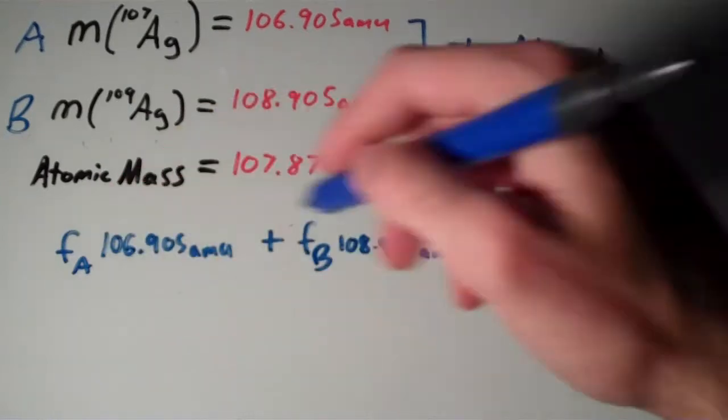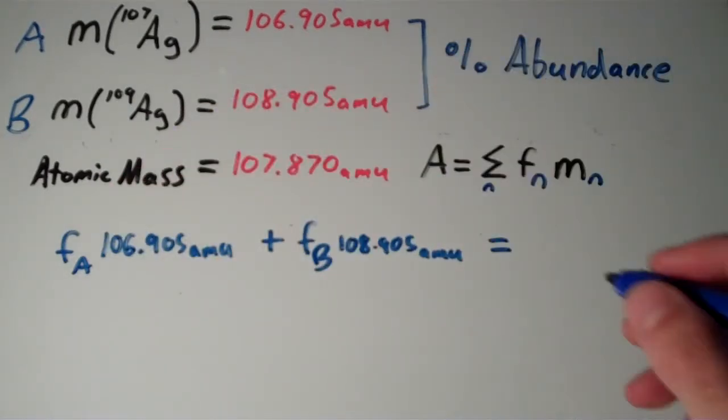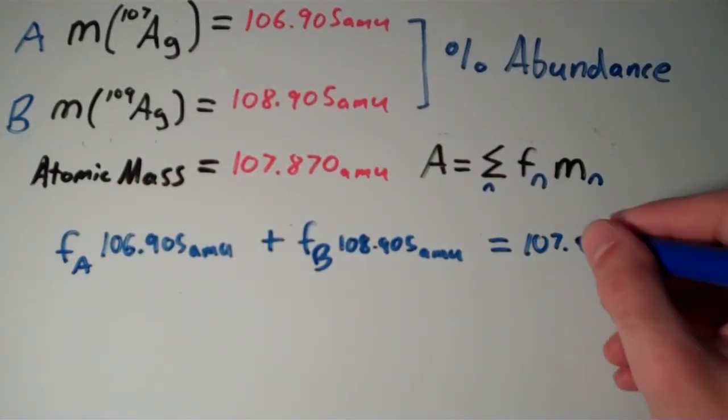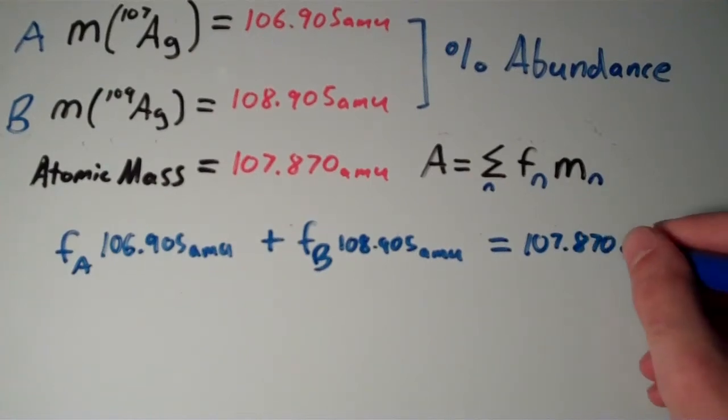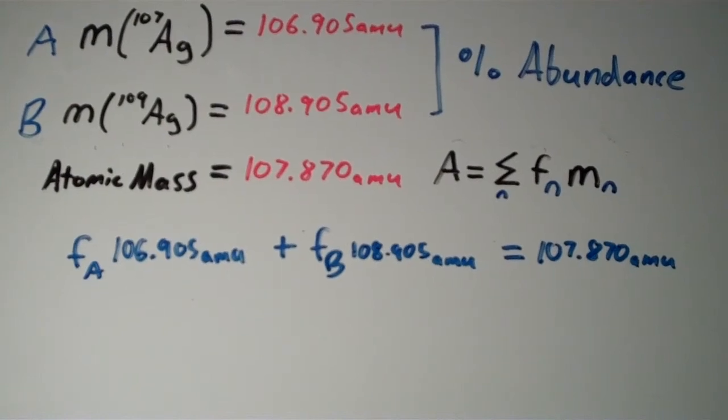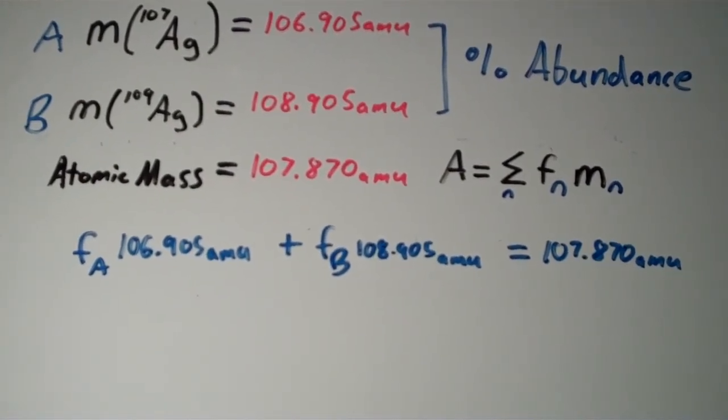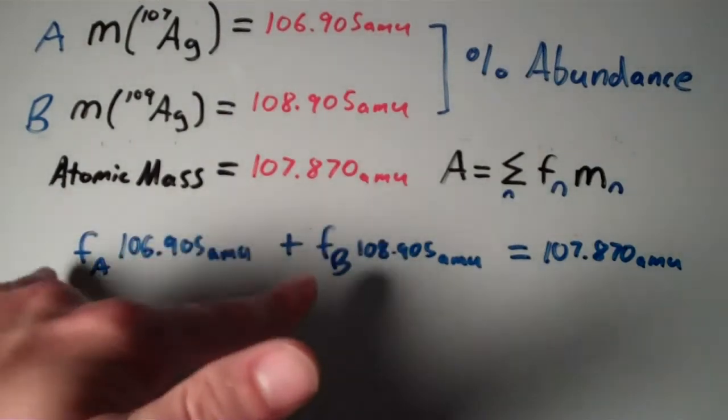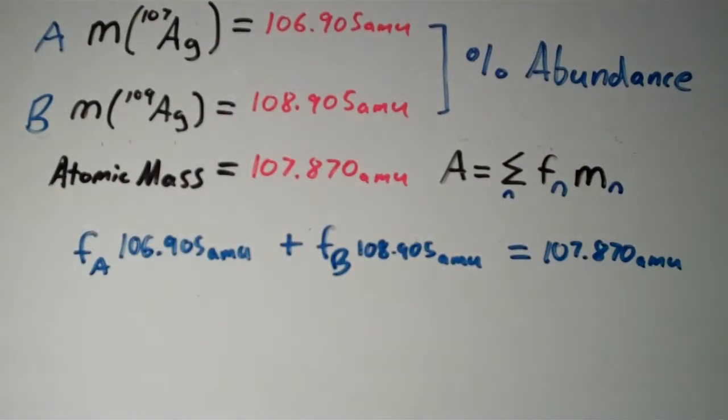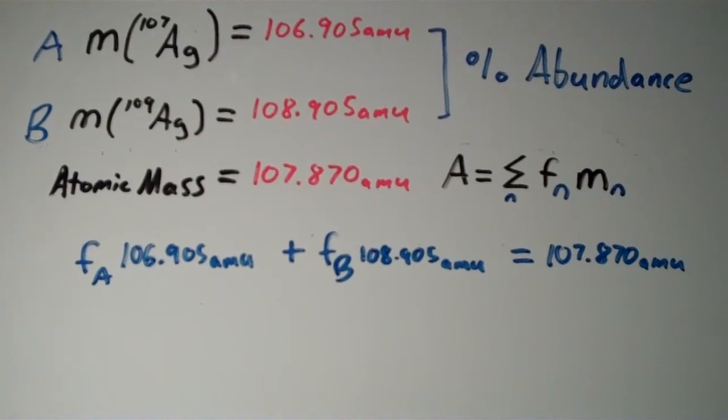Then the sum of these two is going to equal the atomic mass, which is 107.870 AMU. That equation will get us started, but we can't only use this equation because we have only one equation but two unknowns. If you have more unknowns than you have equations, then it is impossible to solve for each of these two unknowns. So we need another equation.